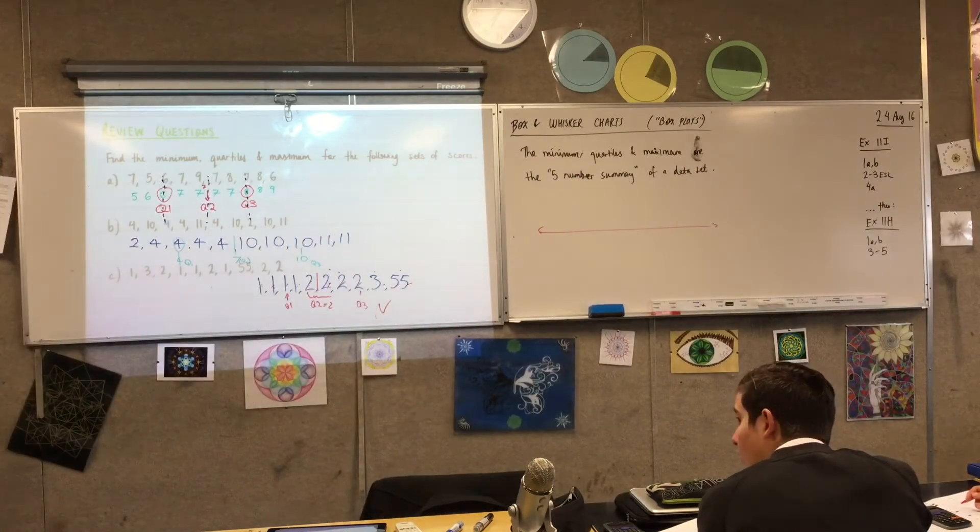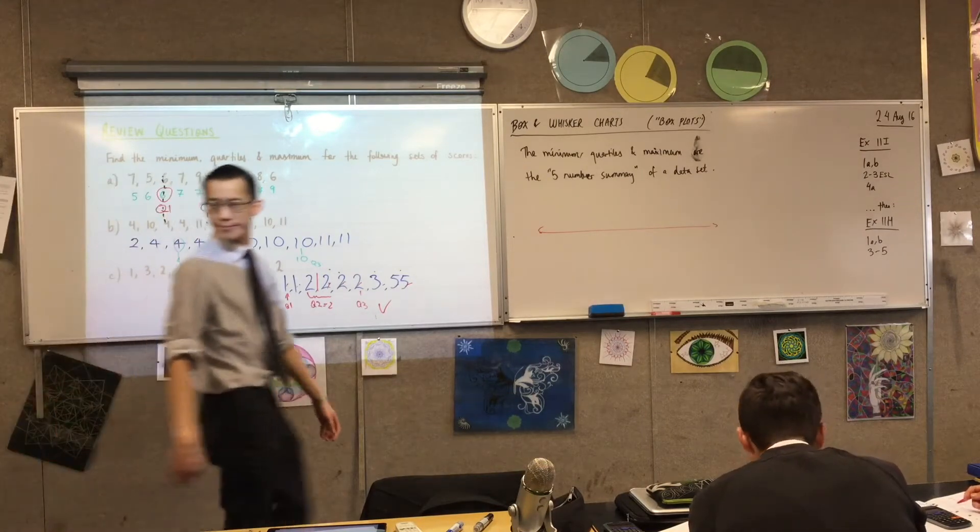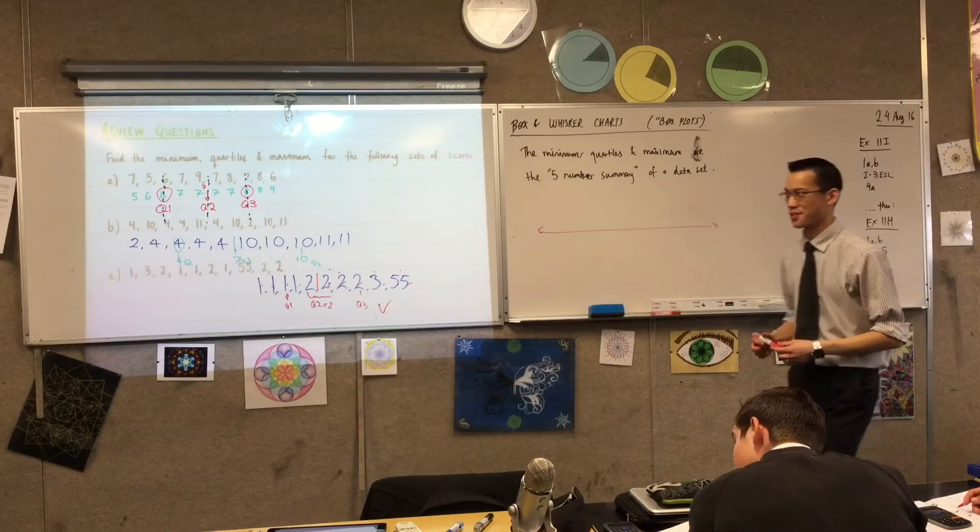If you've never calculated a first or third quartile, how would you work out these block numbers?